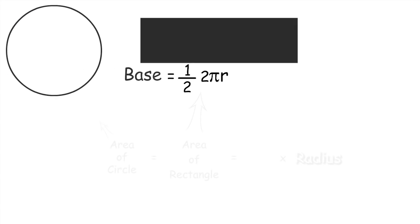When we combine it with one half, the 2's cancel out, and base is equal to pi r.